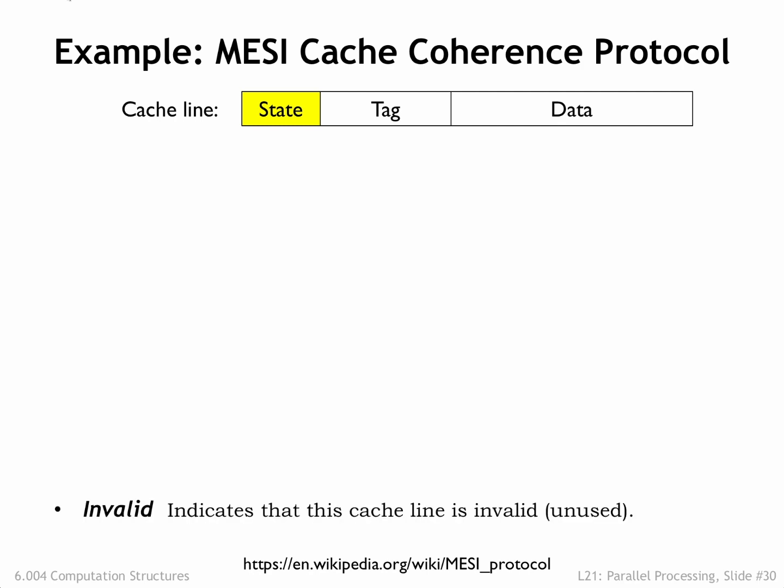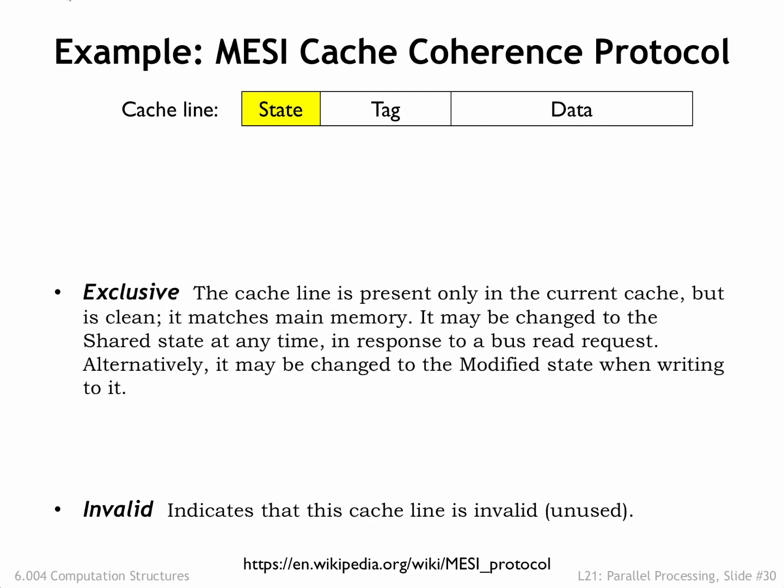The initial state for all cache lines is invalid, indicating that the tag and data fields do not contain up-to-date information. This corresponds to setting the valid bit to 0 in our original cache implementation. When the cache line state is exclusive, this cache has the only copy of those memory locations and indicates that the local data is the same as that in main memory. This corresponds to setting the valid bit to 1 in our original cache implementation.